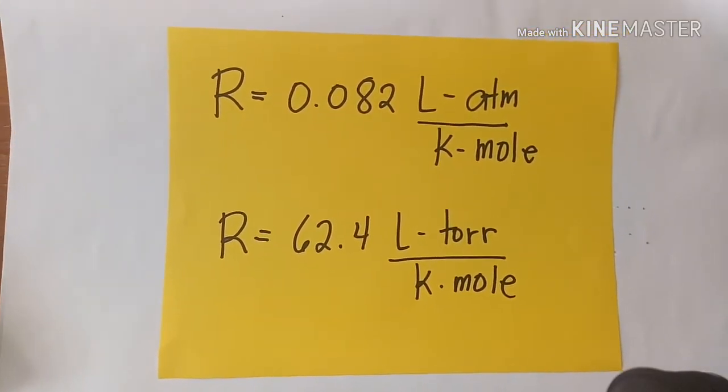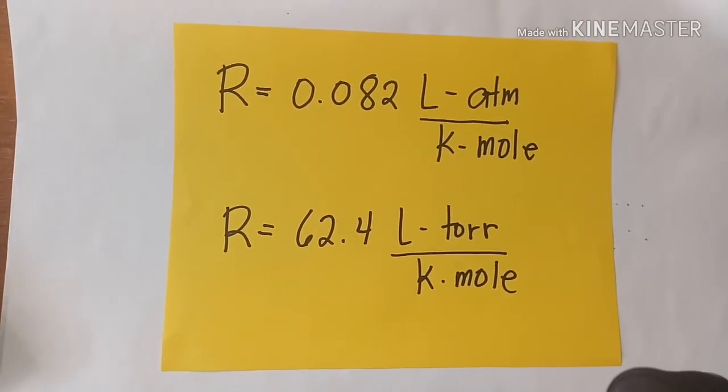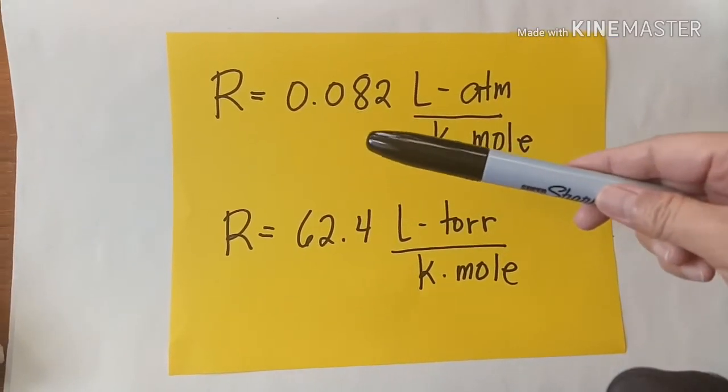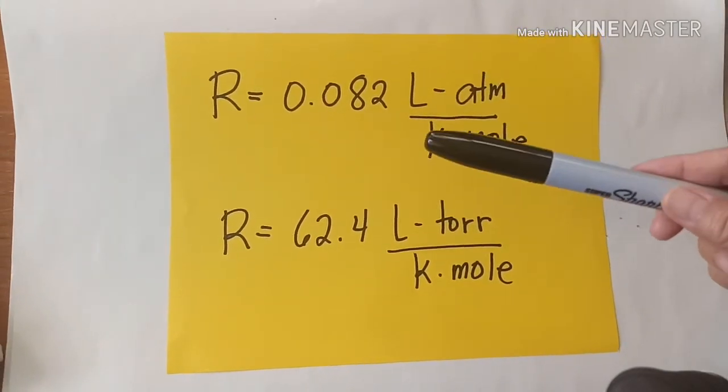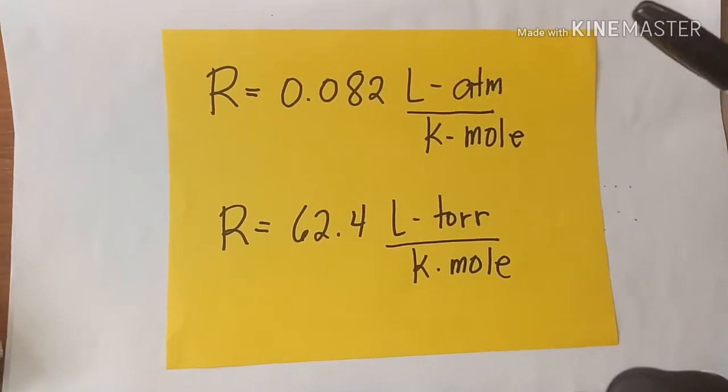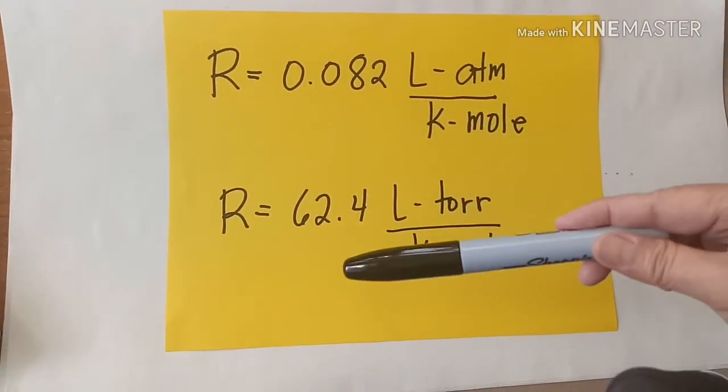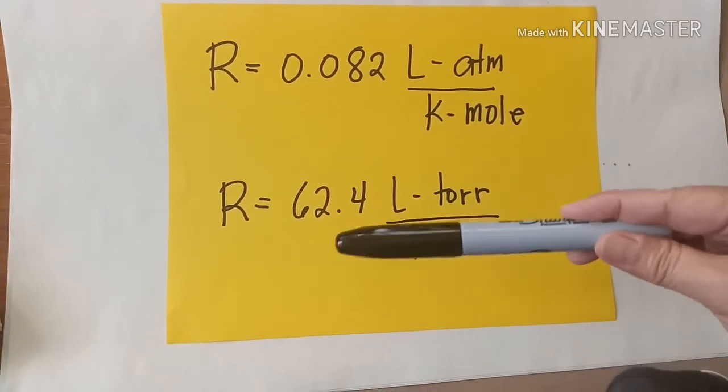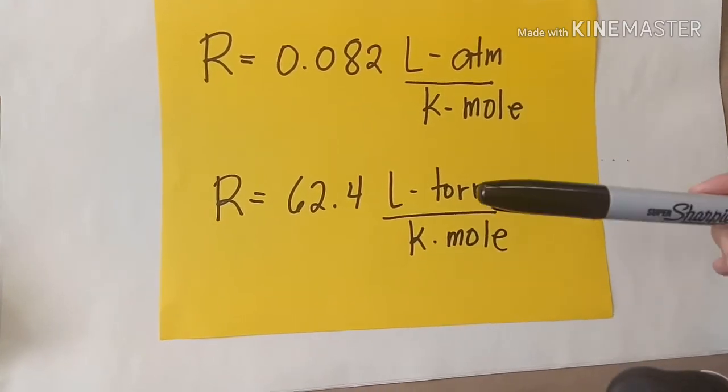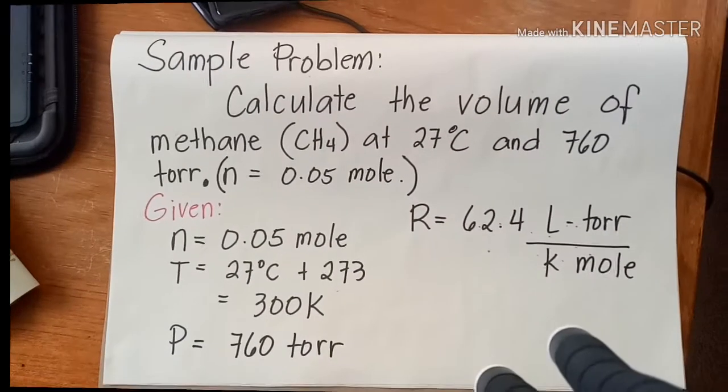Alright, the value of the gas constant R depends upon the units used. They are R equals 0.082 L·atm per K·mole, or liter atmosphere per Kelvin mole, and then the other one is R equals 62.4 L·torr over K·mole, or liter torr over Kelvin mole.